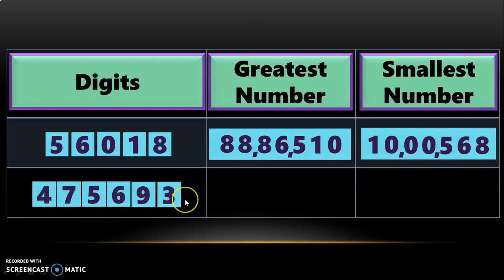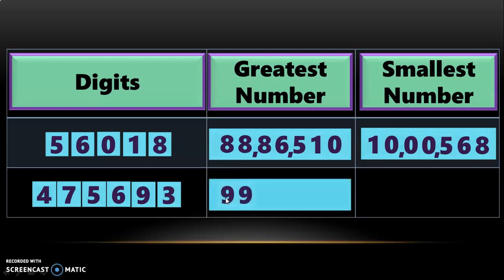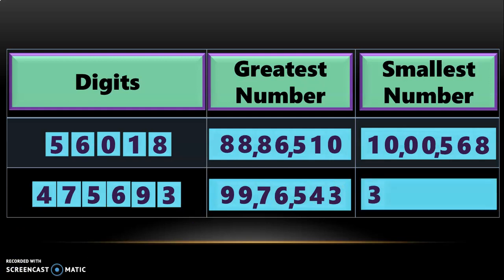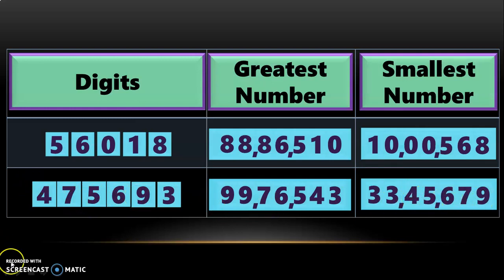Next, with 6 digits given, frame the greatest 7-digit number by repeating the largest digit 9 one more time, then arrange the remaining digits from big to small: 7, 6, 5, 4, 3. Adding periods, the greatest 7-digit number is 99,76,543. To form the smallest 7-digit number, repeat the smallest digit 3 one more time and arrange the remaining digits from small to big: 4, 5, 6, 7, 9. Adding periods, the smallest 7-digit number is 33,45,679.